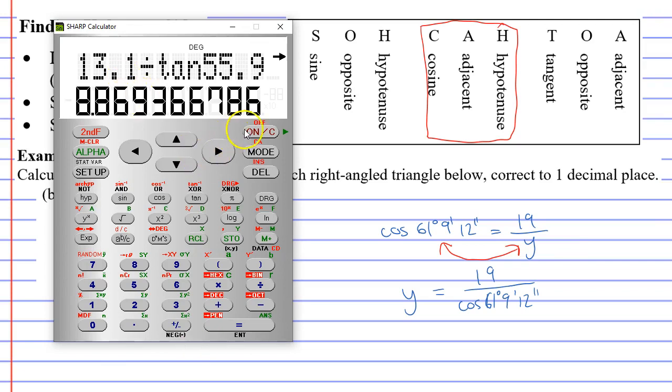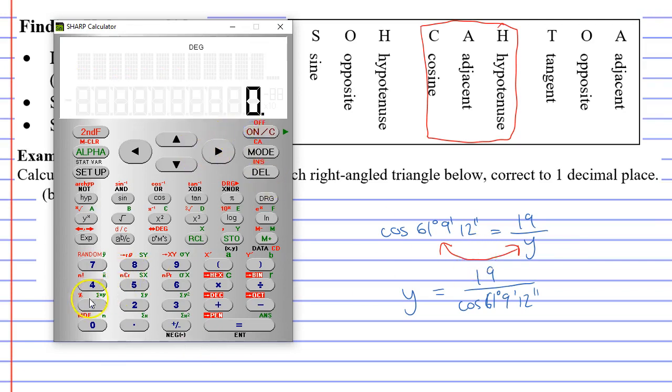And we'll bring up our calculator and clear it. And because it's a fraction, we're just going to use division. 19 divide cos, 61 degrees, 9 minutes, 12 seconds. Equals.